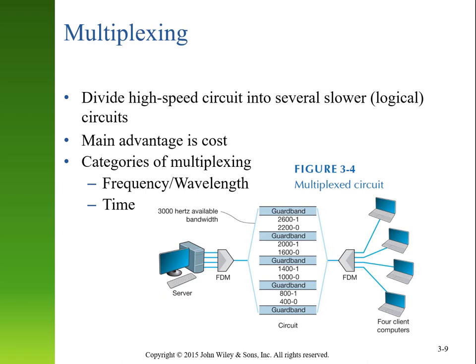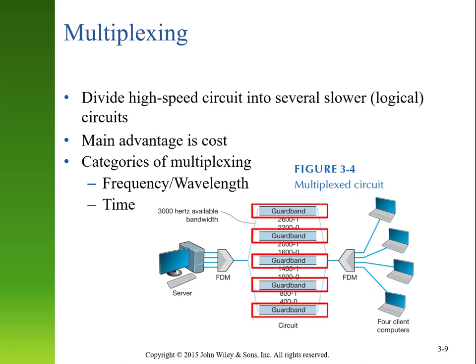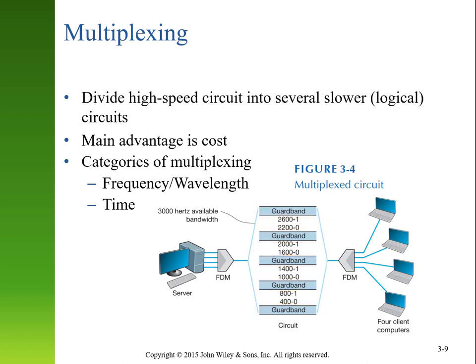When we use frequency division multiplexing, we need to include additional guard bands — extra space in the frequencies — so that we don't have collisions. A computer expecting zeros and ones at 400 Hz and 800 Hz might accidentally send a signal at 900 Hz, and we wouldn't want that to collide with an adjacent device. So we add buffering between frequencies to prevent collisions. This means some bandwidth is used up by guard bands, creating some inefficiency. As equipment improves, guard bands can be narrower, but never truly eliminated.